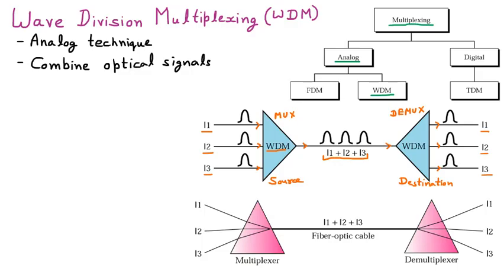We can see that WDM is exactly the same as FDM — frequency division multiplexing. In FDM, frequencies are merged together, but here light signals are merged together. In FDM, normal cables like twisted pair or coaxial cable are used, but in WDM we use fiber optic cable, so light signals travel through fiber optic cable.